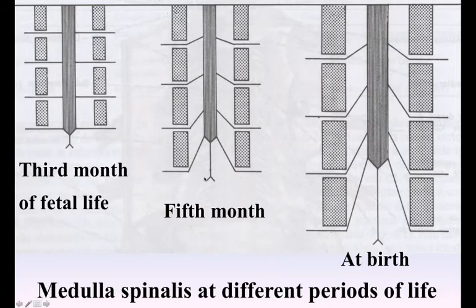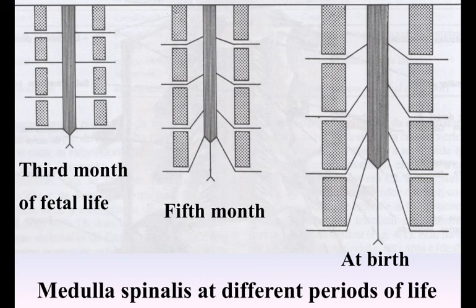The position of the Medulla Spinalis varies with the movements of the vertebral column, its lower extremity being drawn slightly upward when the column is flexed. It also varies at different periods of life. Up to the third month of fetal life, the Medulla Spinalis is as long as the vertebral canal, but from this stage onward the vertebral column elongates more rapidly, so that by the end of the fifth month the Medulla Spinalis terminates at the base of the sacrum, and at birth about the third lumbar vertebra.